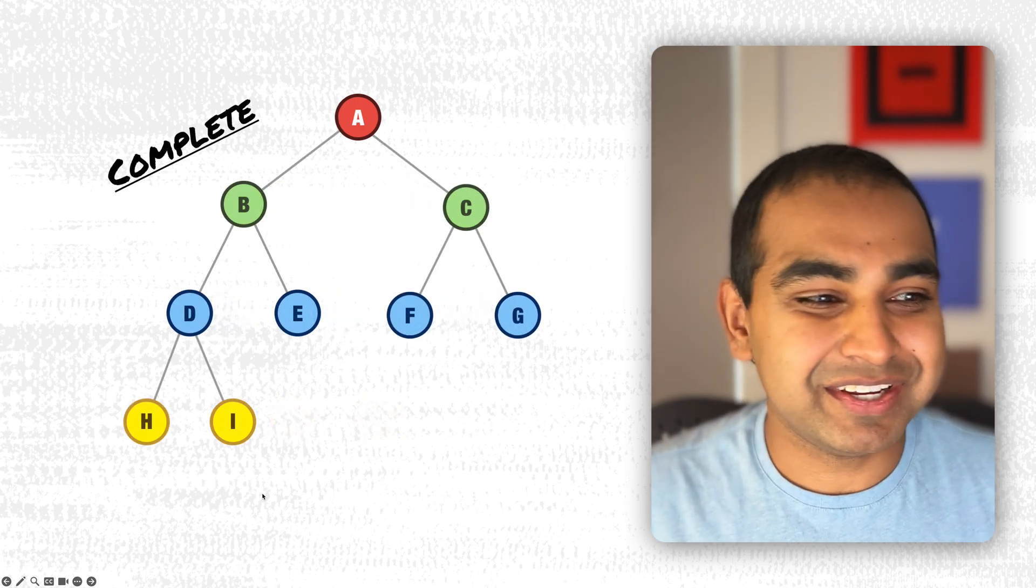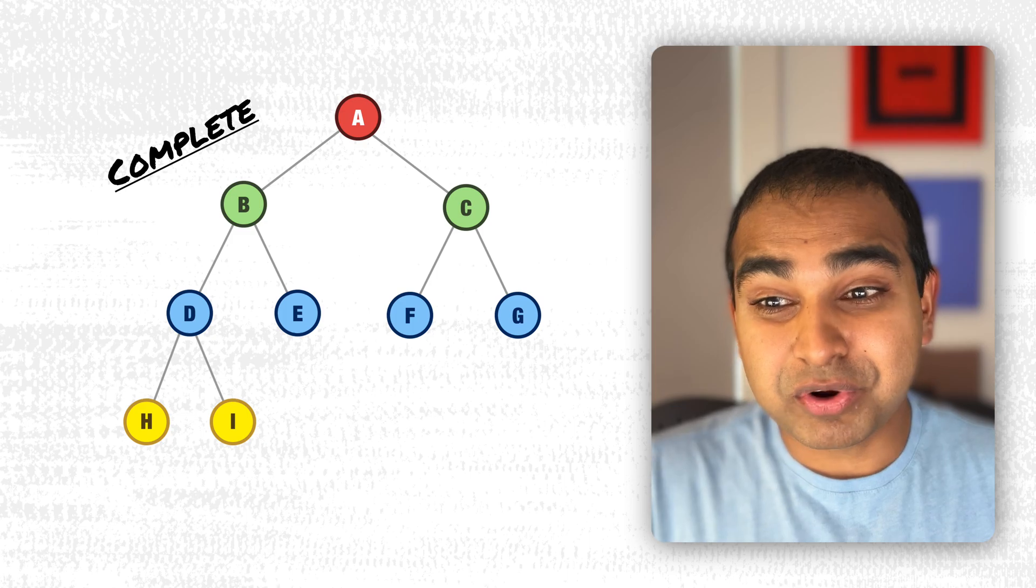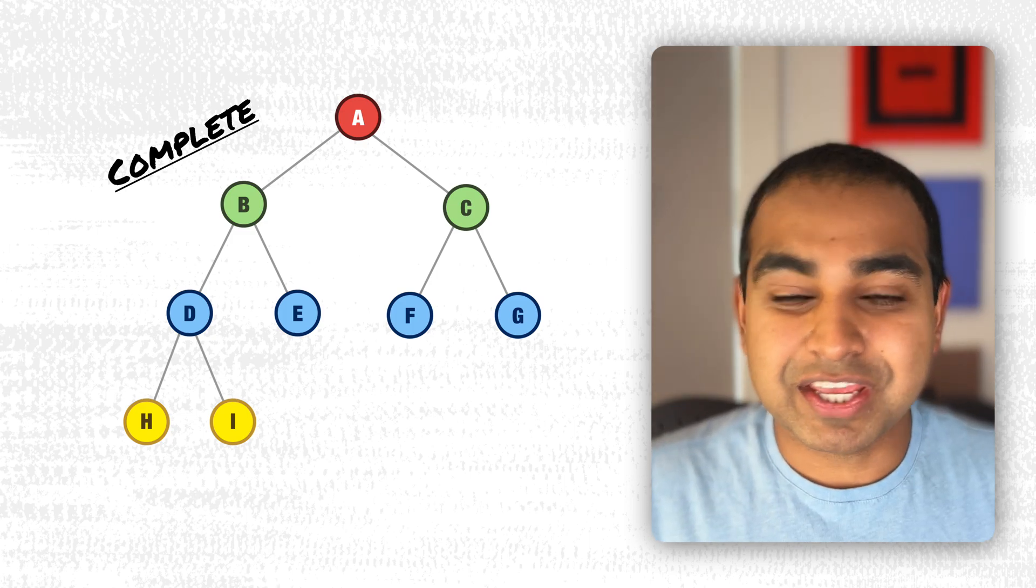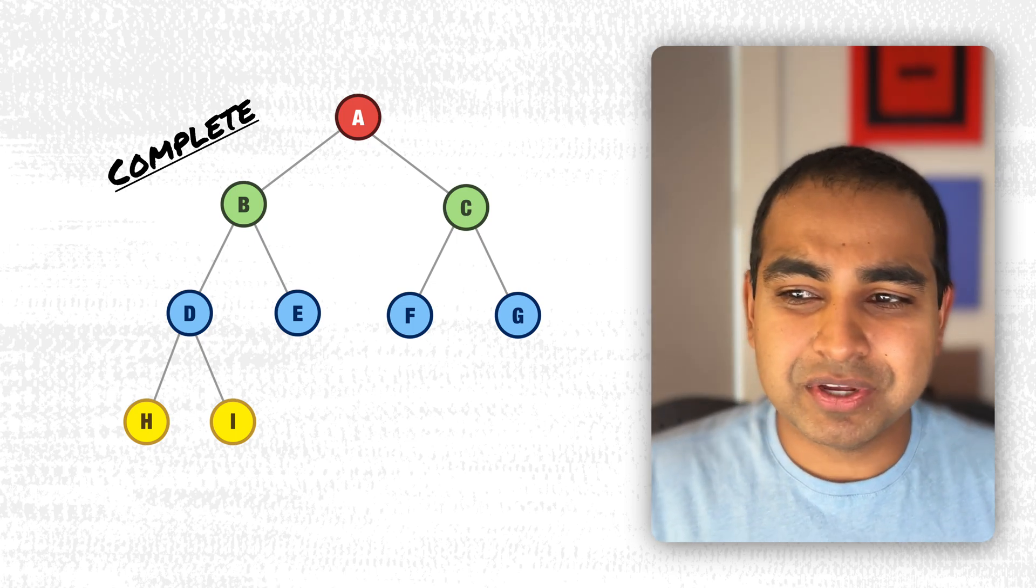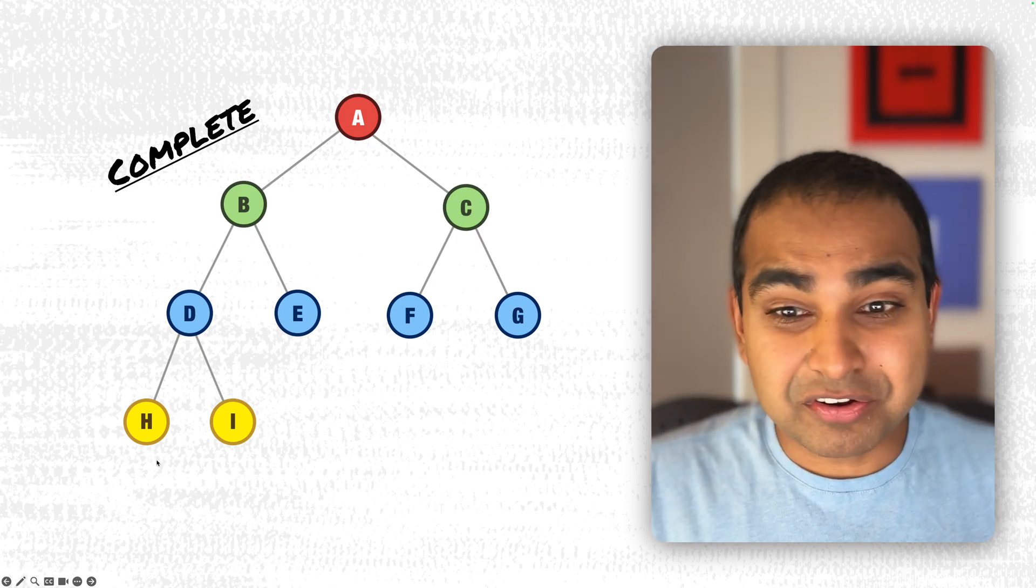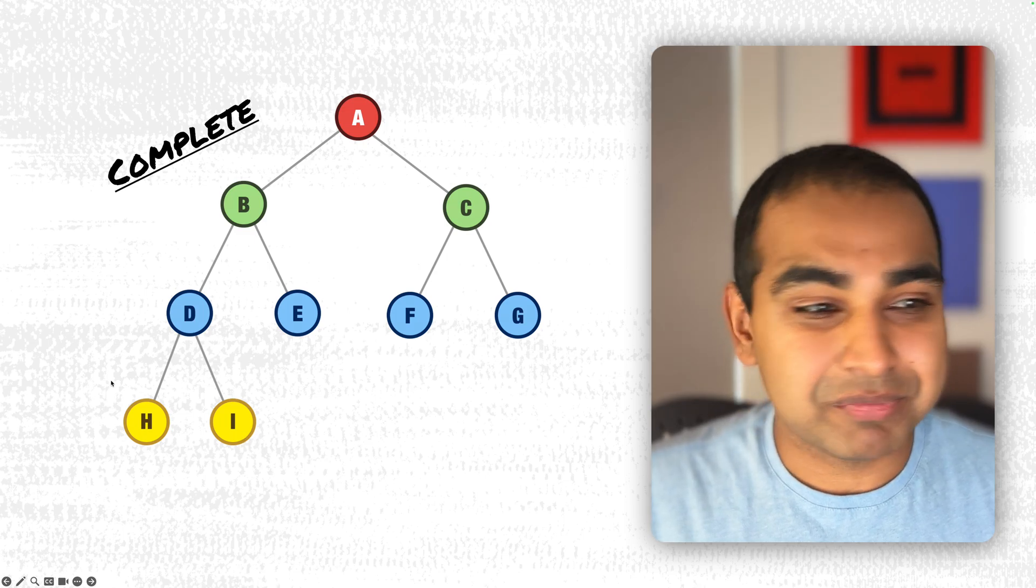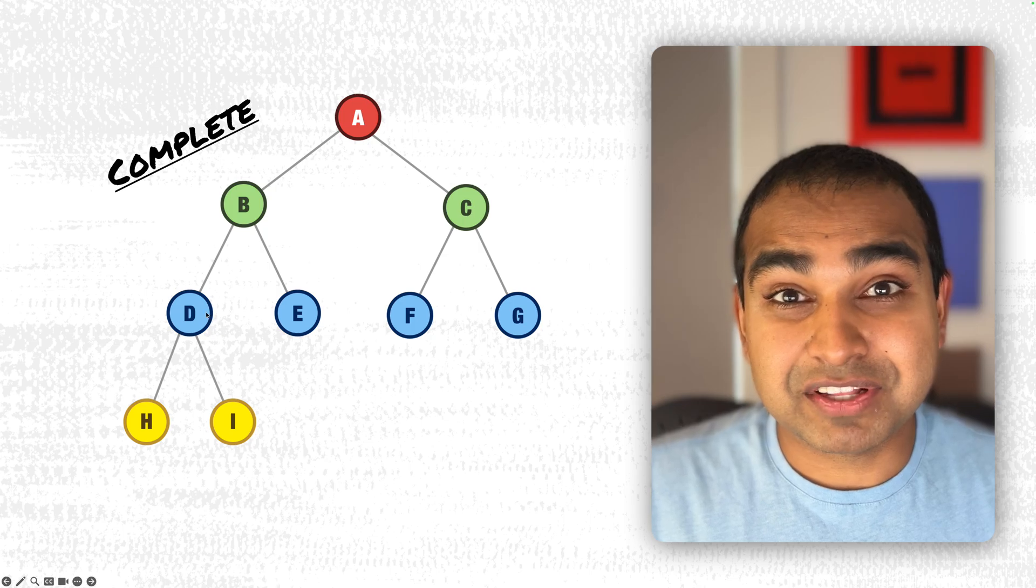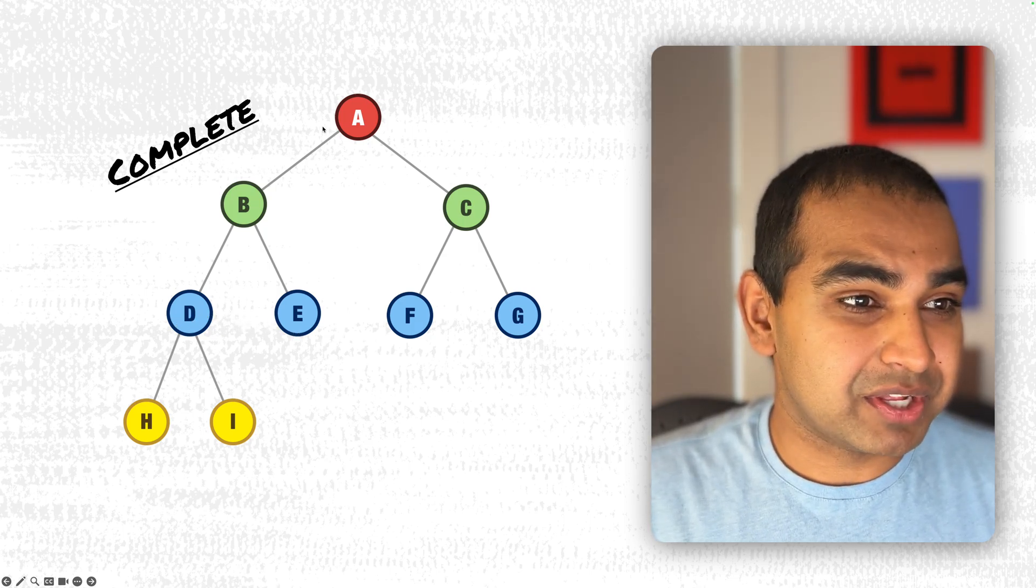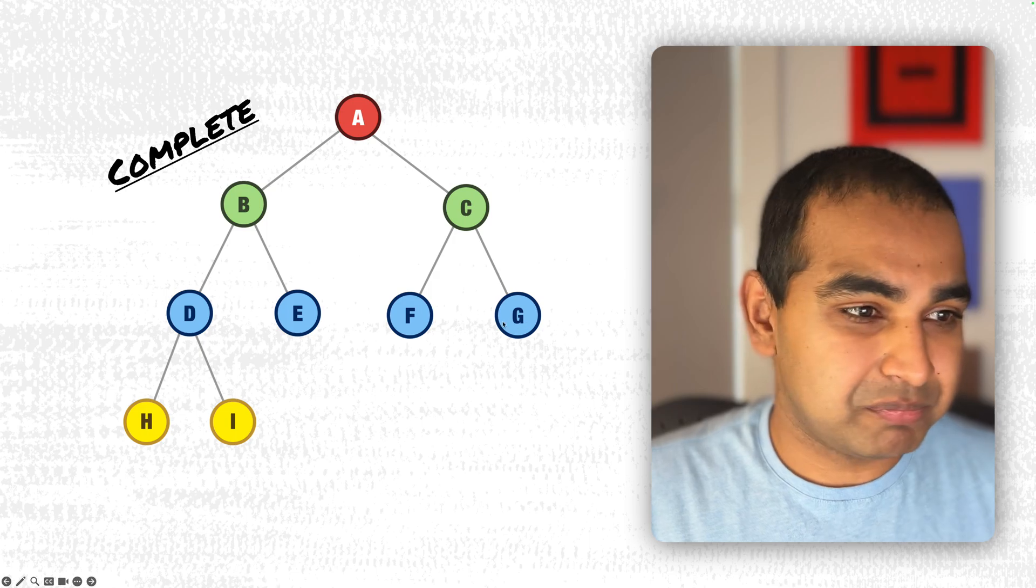A complete binary tree is one where all the rows of the nodes are filled, where each parent has two children, except for the last row of nodes. For the last row of nodes, there are some rules on how nodes should appear. If the last row has any nodes, those nodes will be filled continuously, starting from the left with no gaps. Here you can see A, B, C, D, E, F, and G, and then we have the children of D being H and I.